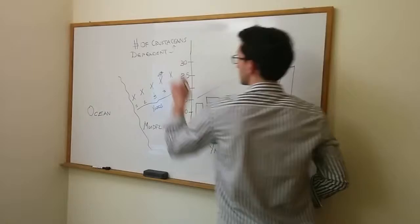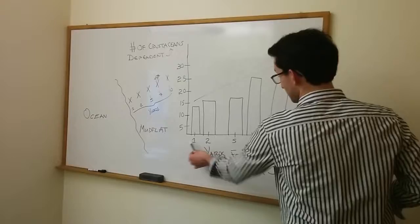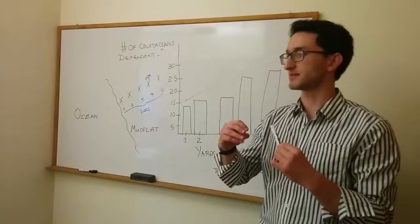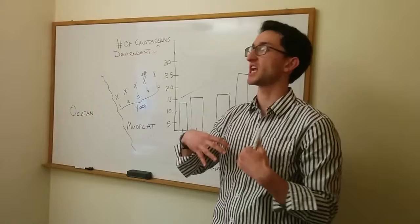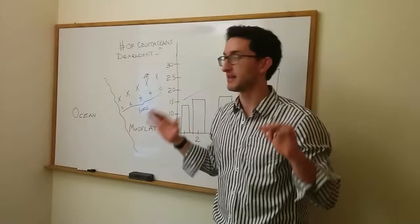We call this our dependent variable because it depends upon our distance from the shoreline, our other variable. And when we're designing experiments in the future, this is the crux of what we'll be thinking about: which variables do we change and which variables are changing as a result of what we are changing. You might think, wow, this is kind of confusing. You've got these two different names for variables. How am I going to remember them?